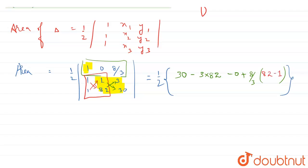And then on solving this further, it comes out to be half of 30 minus 246—3 into 82 is 246—and then 8/3 into 81. So minus 216 plus 8 into 27, and it will be half of minus 216 plus 216.